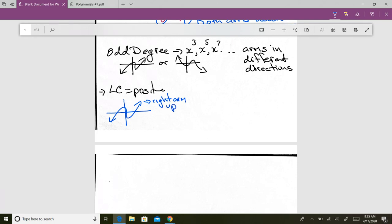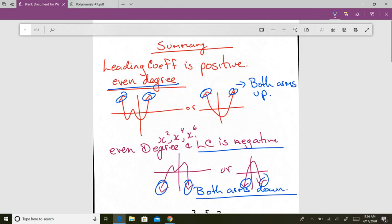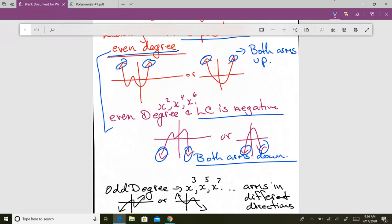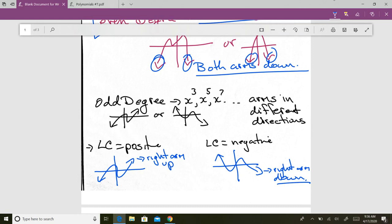If the leading coefficient is negative, that's an odd degree, and big guess here, the right arm is down. That's it. So if you remember that if you have an even degree function, arms are in the same direction, either up or down. It will be up if you have a leading coefficient that is positive. It will be down if your leading coefficient is negative. If you have an odd degree, your arms are going different directions. If the leading coefficient is positive, the right arm is up. And if the leading coefficient is negative, the right arm is down. That is what you need to remember from this lesson.